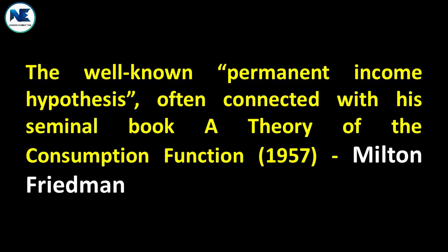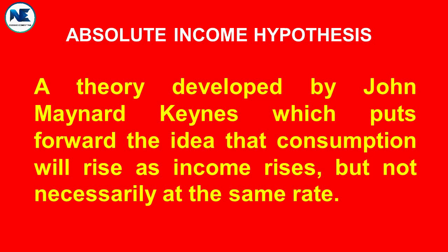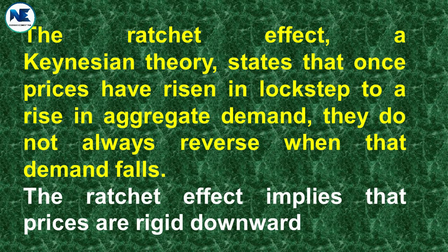The life cycle hypothesis was developed by Franco Modigliani in 1957. It states individuals seek to smooth consumption over a lifetime — borrowing in times of low income and saving during periods of high income. The permanent income hypothesis is from Milton Friedman's seminal book 'A Theory of the Consumption Function' published in 1957. The absolute income hypothesis by Keynes states consumption rises as income rises, but not necessarily at the same rate. The ratchet effect: once prices have risen in lockstep to a rise in aggregate demand, they do not always reverse when demand falls — prices are rigid downward.